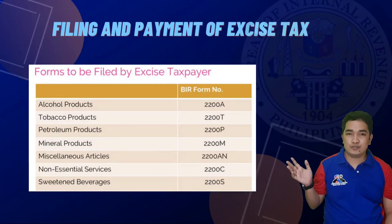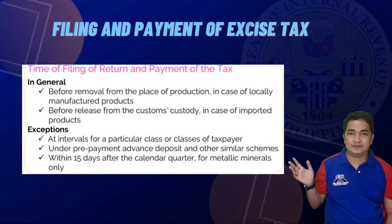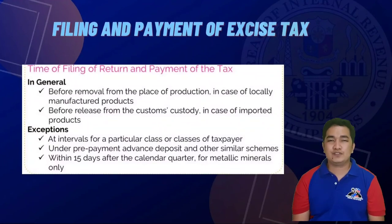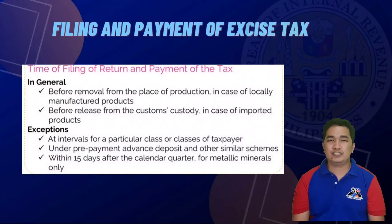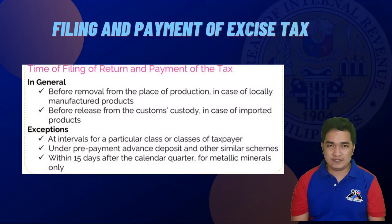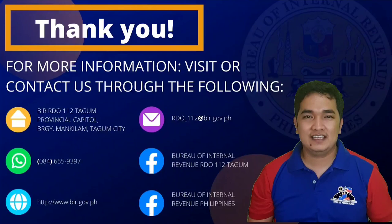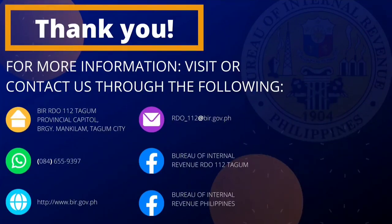Please refer to the forms to be filled by excise taxpayers per product. Time of filing of return: in general, before removal from the place of production for locally manufactured products, and before release from customs custody for imported products. Exemptions may be filed at intervals for a particular class of taxpayers under prepayment, advanced deposit, or other similar schemes, or within 15 days after the calendar quarter for metallic minerals. That concludes the basic concepts of excise taxes. Thank you.